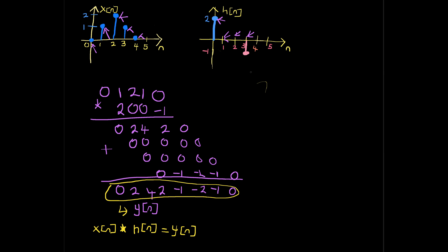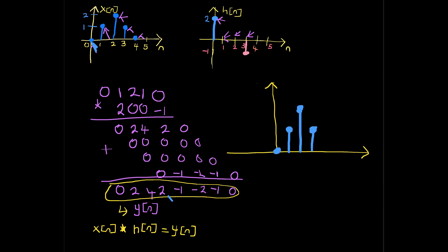Now if you want to translate this back to your graph, all you do is plot Y[n]. Note that X[n] starts from zero, so Y[n] also starts from zero. The first value is zero, the second is two, next is four, then two, then negative one, then negative two, then negative one, and zero.